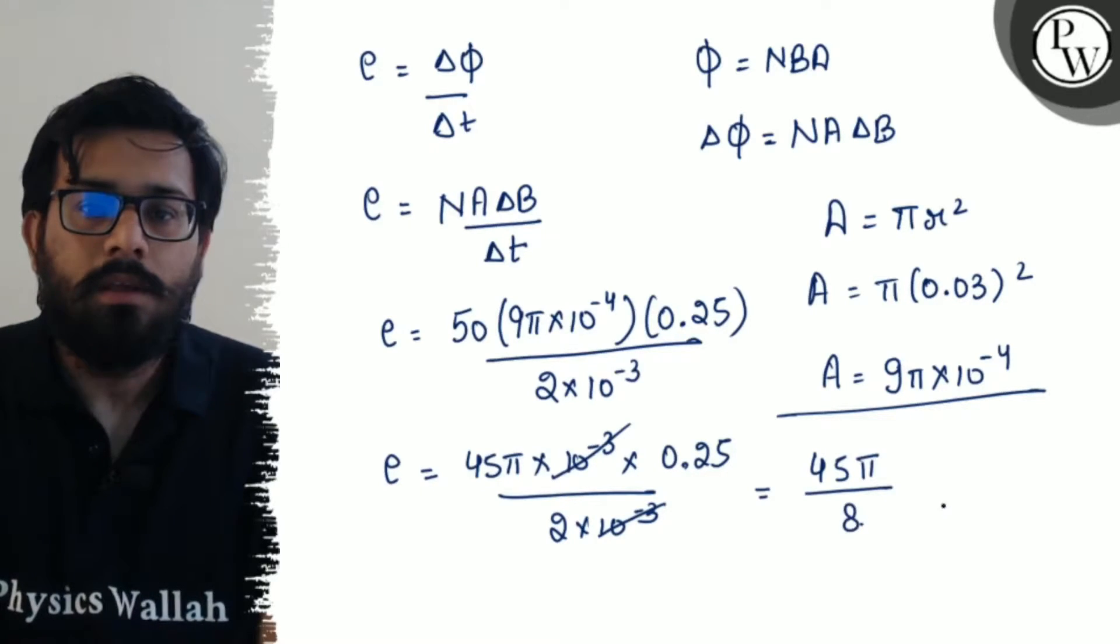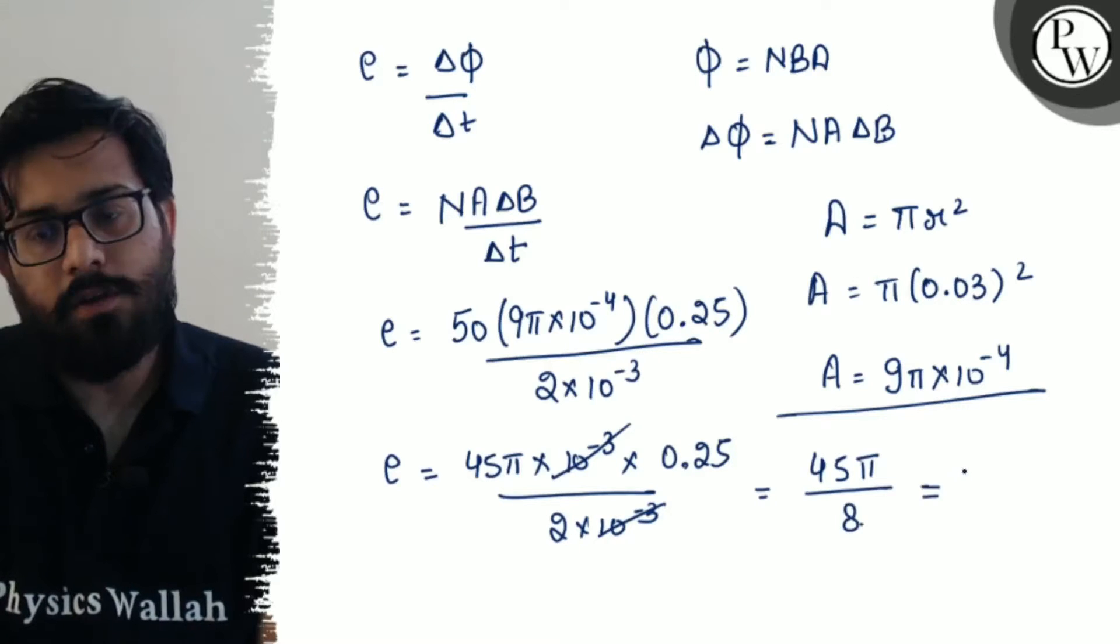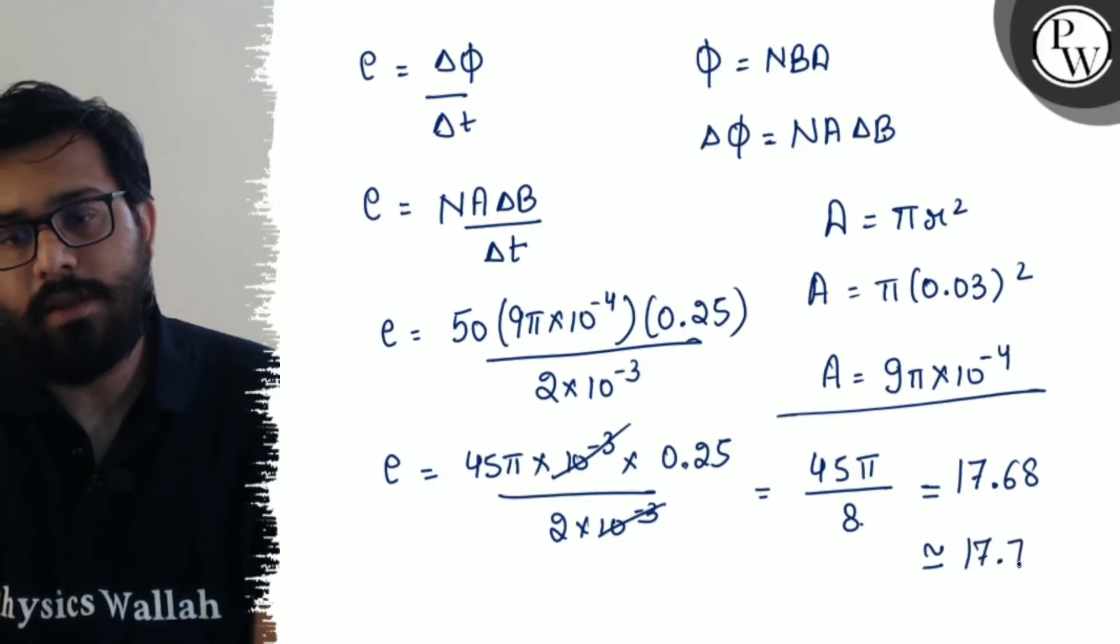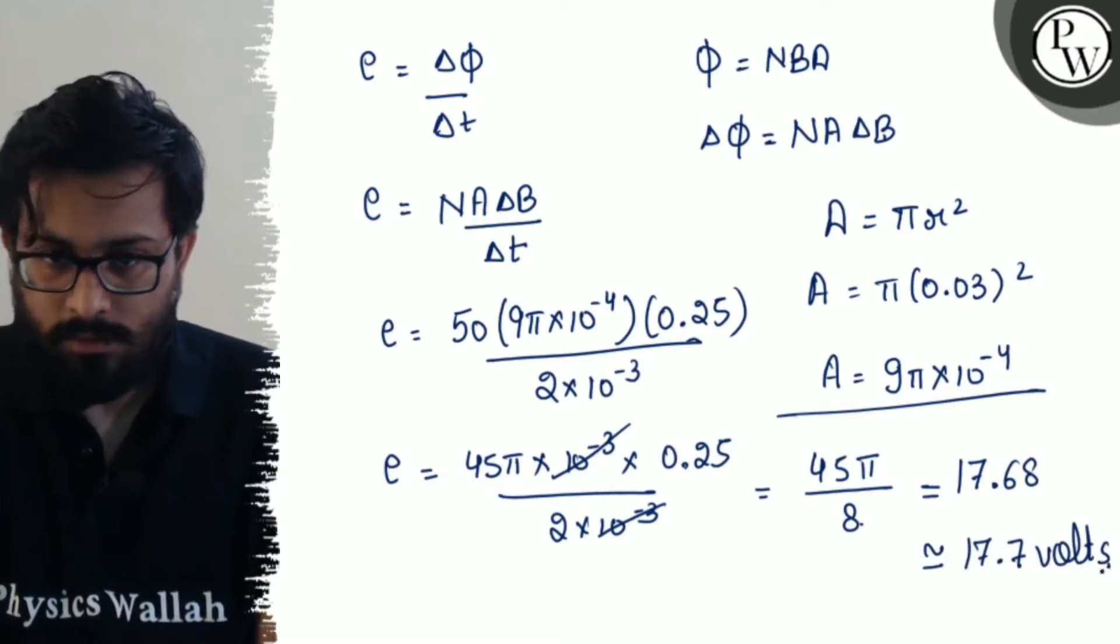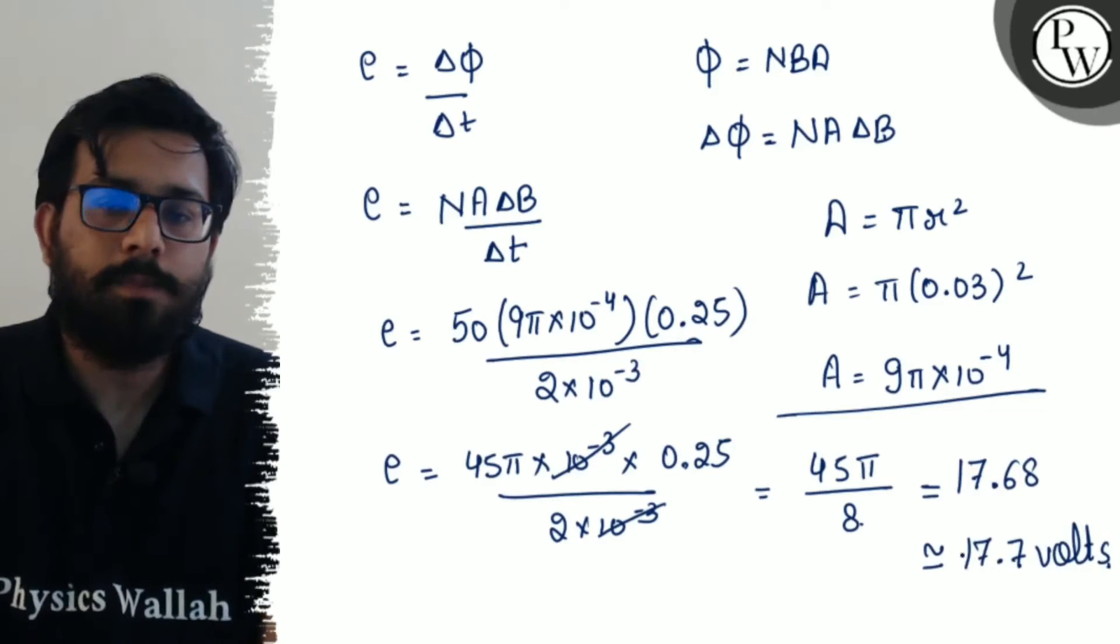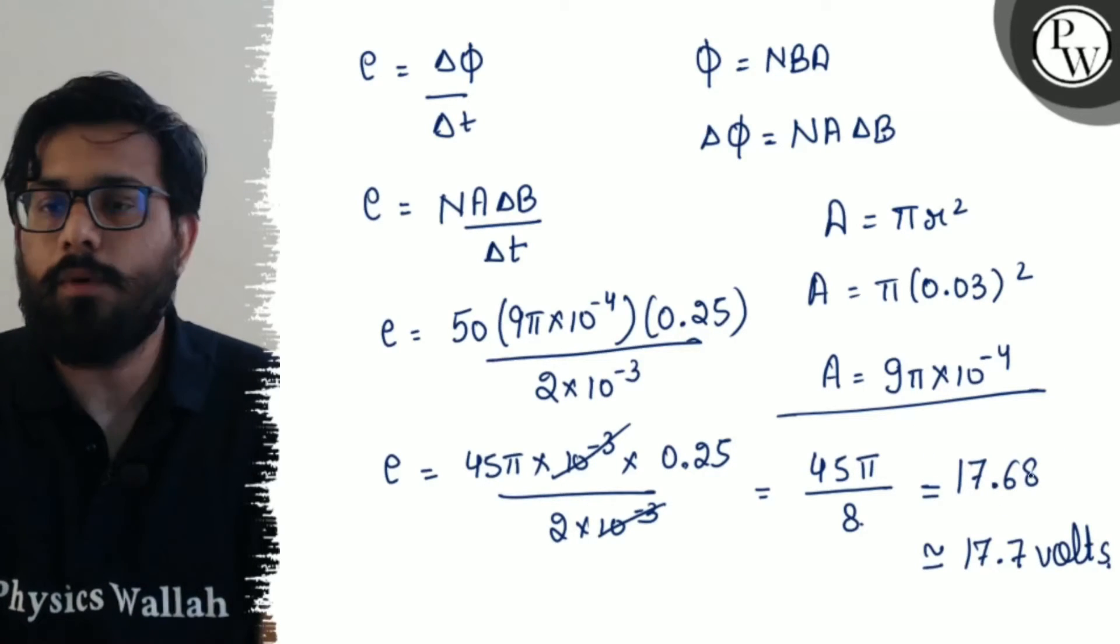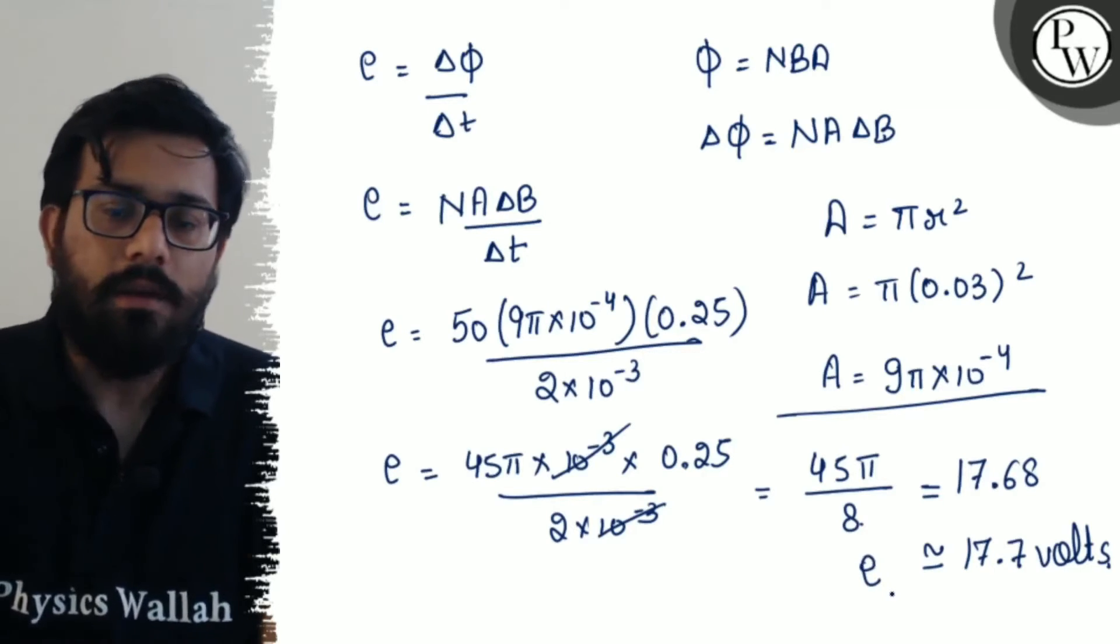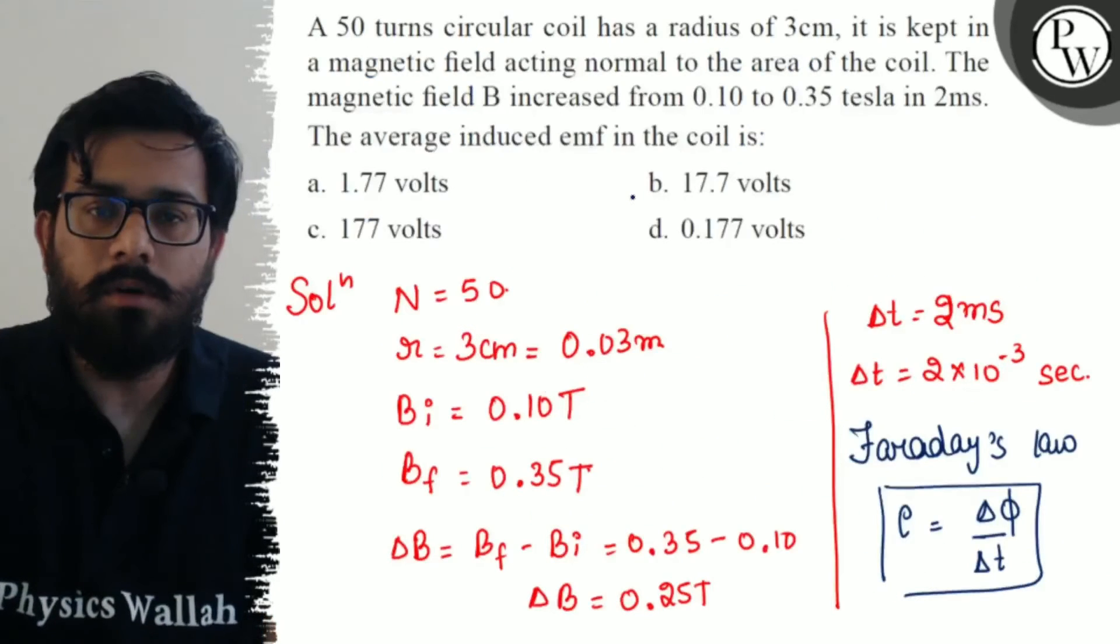If you solve it further, you will get the value of 17.68, which can be approximately written as 17.7 volts, which is option number B.